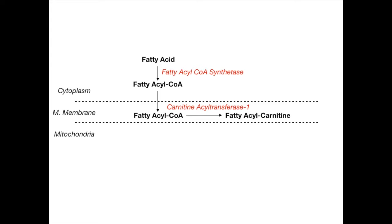A very high-yield point: this step — conversion by CAT-1 — is inhibited by malonyl-CoA. Malonyl-CoA is one of the downstream products in fatty acid synthesis. If malonyl-CoA is present, it means you're synthesizing fatty acids, so it makes perfect sense to inhibit fatty acid breakdown at this step as a feedback mechanism.